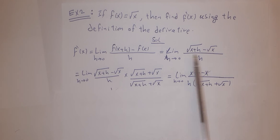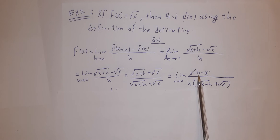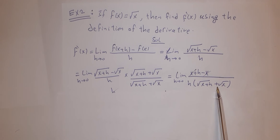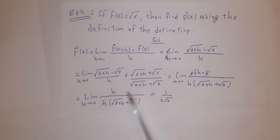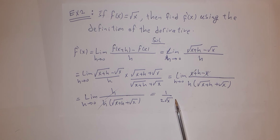Multiplying by the conjugate gives: limit of [(x+h) − x] / [h · (√(x+h) + √x)]. Since x − x = 0, the numerator simplifies to h, which cancels with the h in the denominator. Substituting h = 0 gives 1 / (√x + √x) = 1 / (2√x).